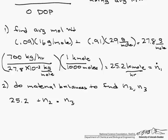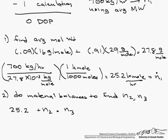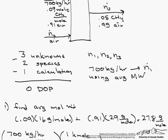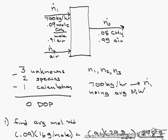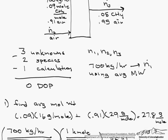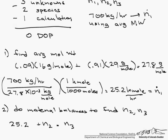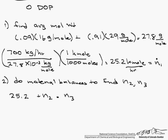And given the choice between an air balance and a methane balance, if you look at the problem, so let's go back up and look at this picture. What you'll notice is if you do a methane balance, methane only appears in two streams, N1 and N3. And we already know what N1 is, so it's easier to do a methane balance than an air balance even though we could do either one and get the same answer.